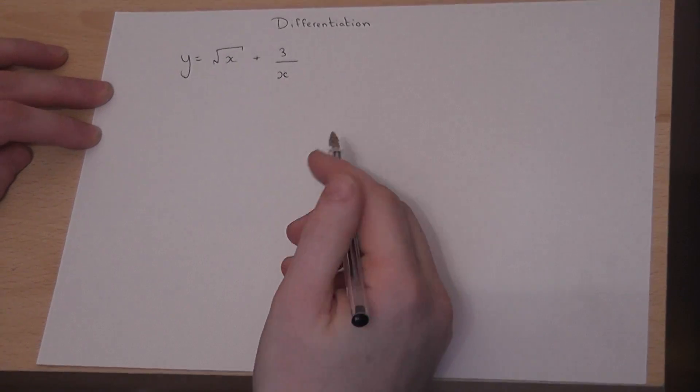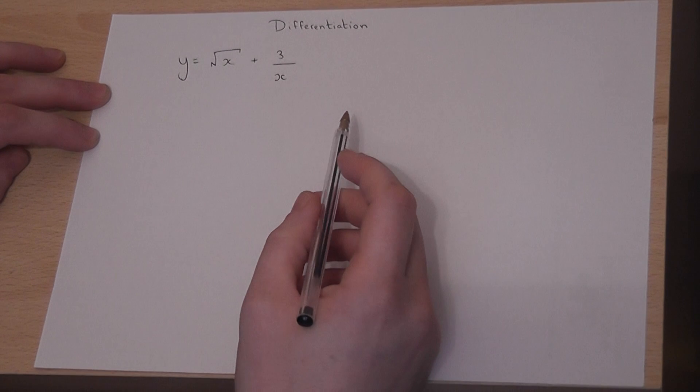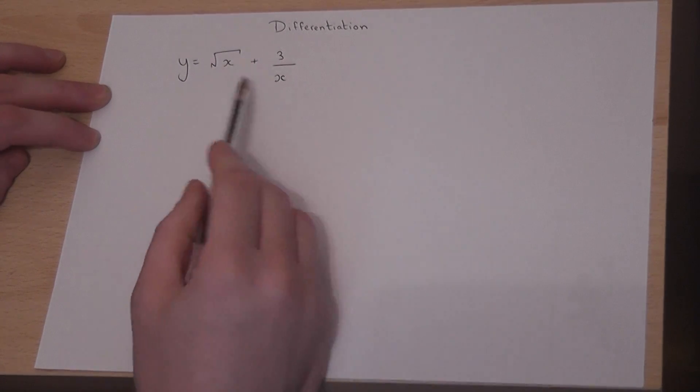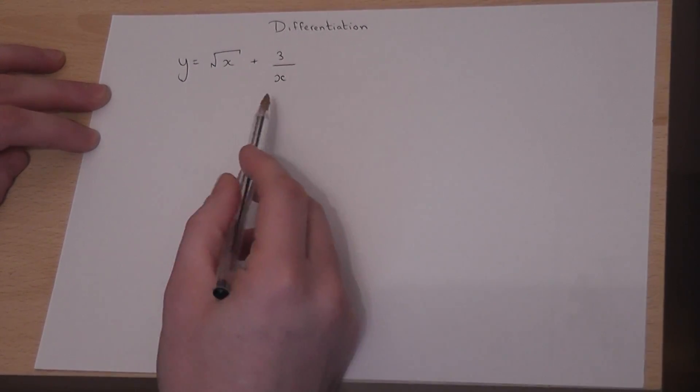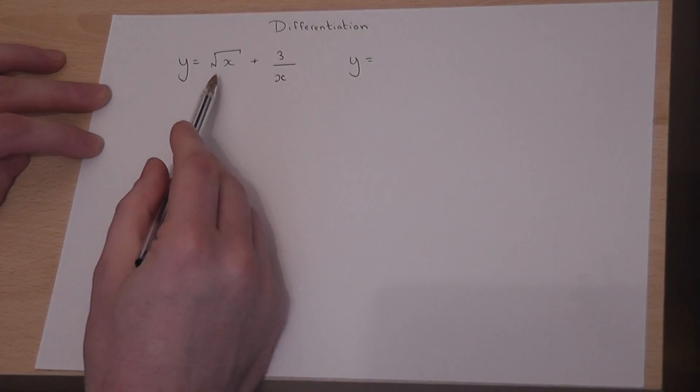This video looks at a slightly more complex example of differentiation where we have a square root and a reciprocal. Now the method here is to write both parts of this expression as powers.